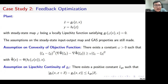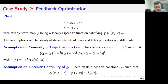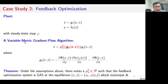For the example of feedback optimization, we can see this plant and make assumptions on the strong convexity of the objective function, which is normally assumed in the literature of feedback optimization. We also assume that the gradient function gs is Lipschitz continuous. These two assumptions together guarantee that the normal gradient-based optimization algorithm admits some robustness property. For this plant and for this variable metric gradient flow algorithm, we can prove the existence of the perturbation function gs0 for global asymptotic stability of the closed-loop feedback optimization system.